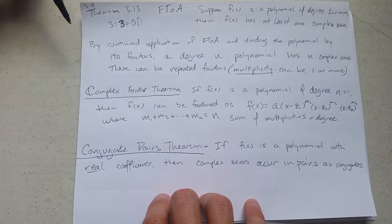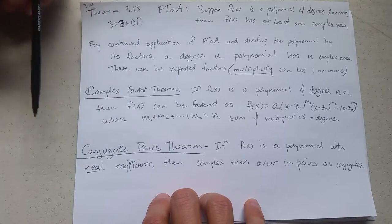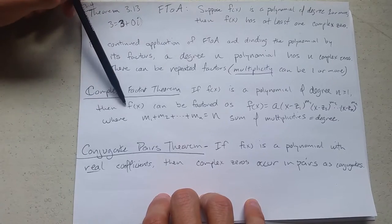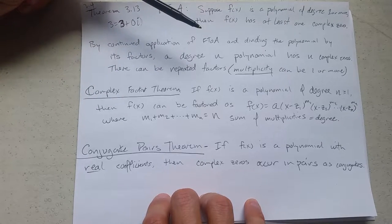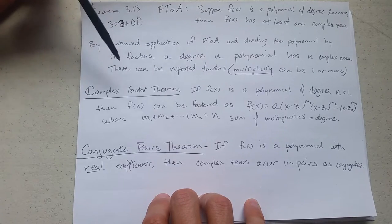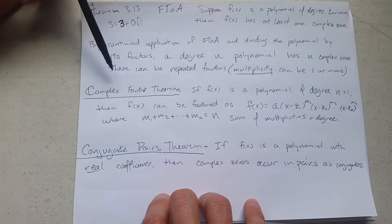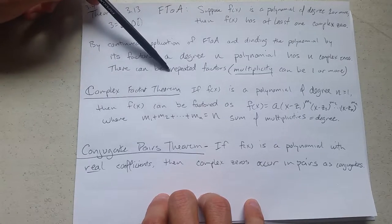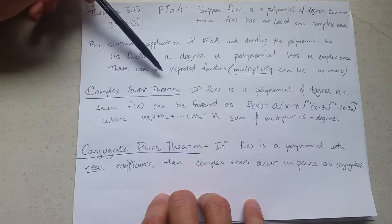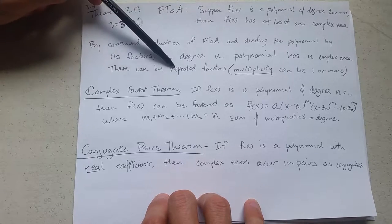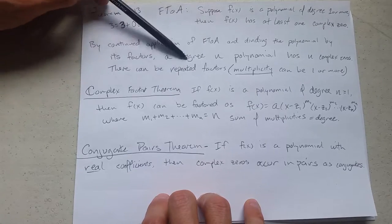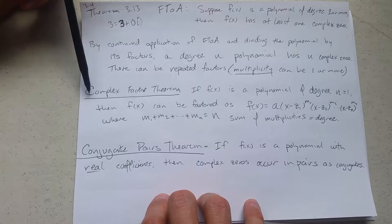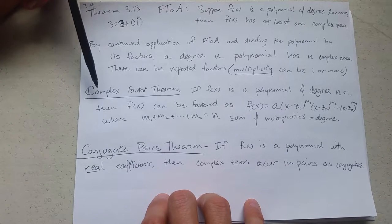If you apply the fundamental theorem of algebra and you continuously keep dividing the polynomial by the factor, you will drop one degree at a time. If you have a degree n polynomial, it will have n complex zeros. Now you have to be careful, you can have higher multiplicities than 1. So these are what we call repeated factors. And if they are real, this would be the multiplicity to determine if it's crossing or bouncing as an x-intercept. Complex factors, complex zeros, do not show up as x-intercepts.